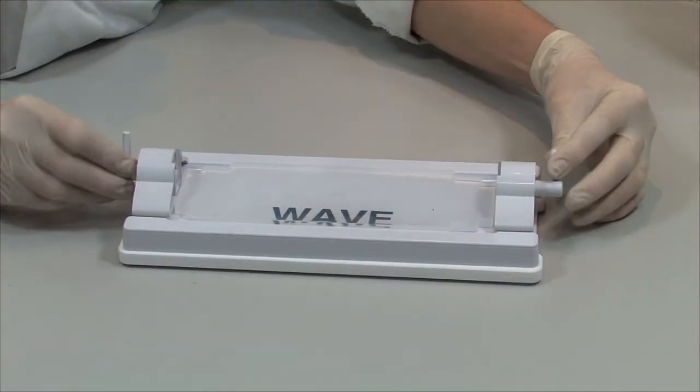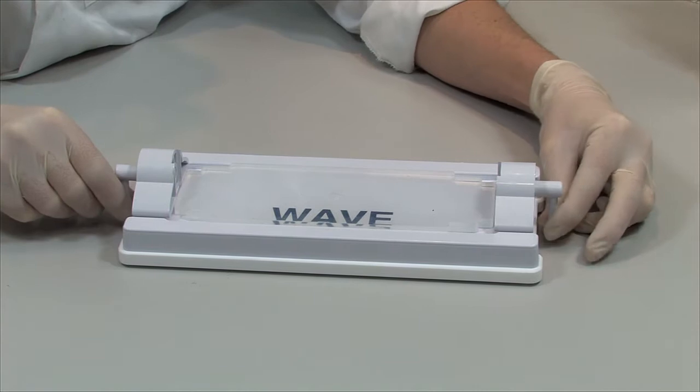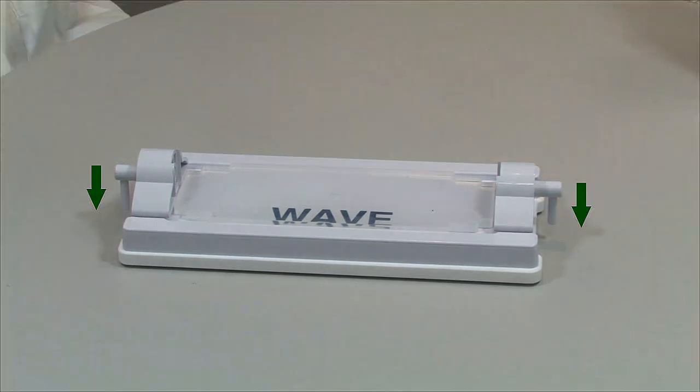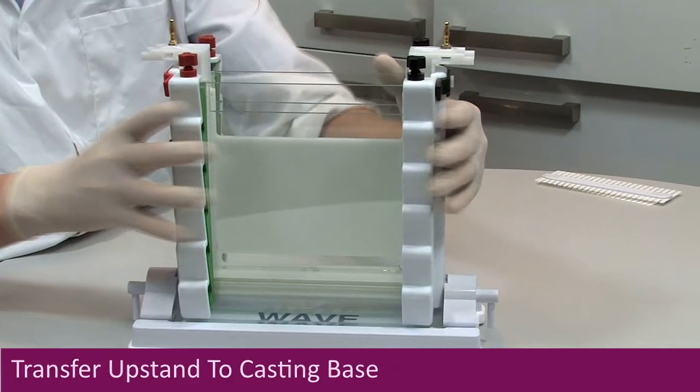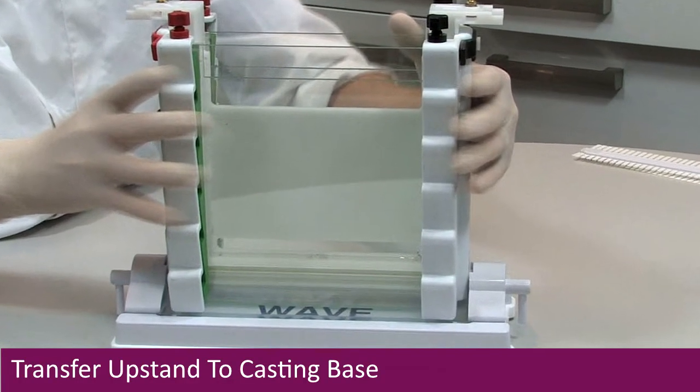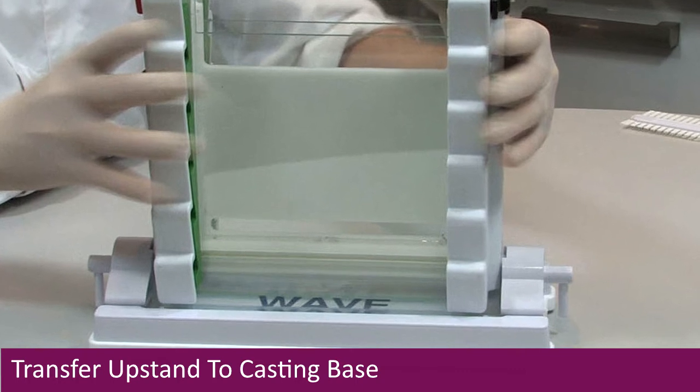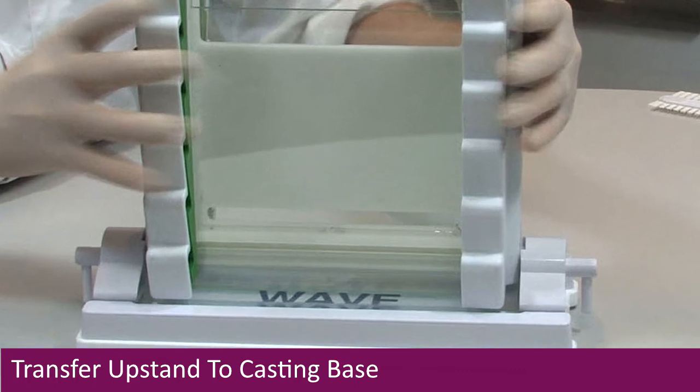Pull out the cam pins from the casting base and rotate them so that they point downwards into the lab bench surface. Transfer the upstand containing glass plates to the casting base, ensuring that the glass plates sit evenly on the ultra soft silicon mat.